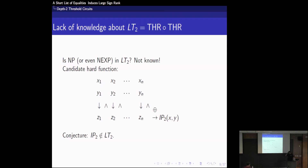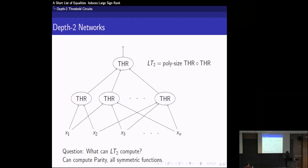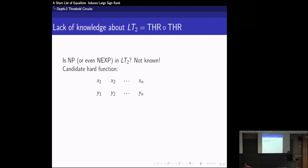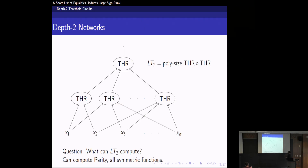It's conjectured that inner product mod 2 cannot be computed by polynomial-sized LT2 circuits. The current best known lower bound says you need size n^(3/2) to compute inner product using threshold-of-threshold circuits. Regarding why parity is in LT2: it is in majority-of-majority, where the bottom-layer majorities identify the Hamming weight of the input, and the top layer uses that. Inner product is XOR of AND, XOR is computable by LT2, and AND is LT1, so the whole function is in LT2 — in fact in majority-of-majority-of-majority with poly-bounded weights.